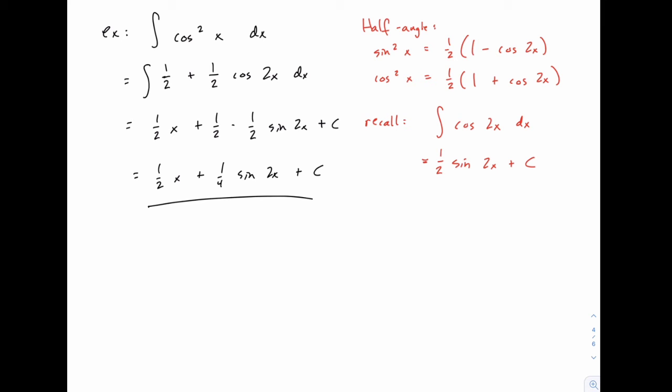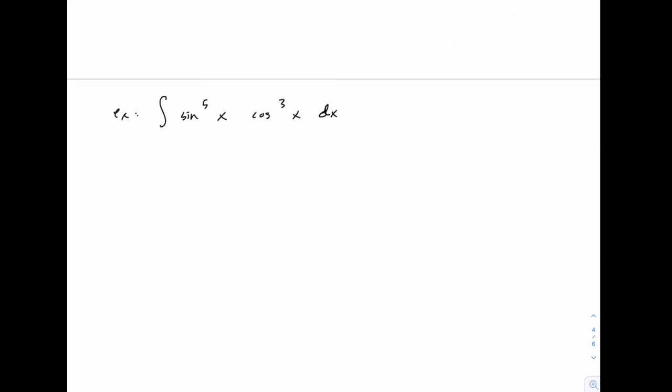Let me show you one more example where both powers are odd. And if you remember when we're looking at one of these examples we're looking for an odd power to separate off as du. In this case both of them are odd so really we could choose either one. We could split off sine of x and rewrite everything else in terms of cosine, or we could split off cosine and write everything else in terms of sine.